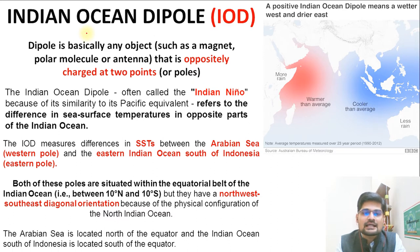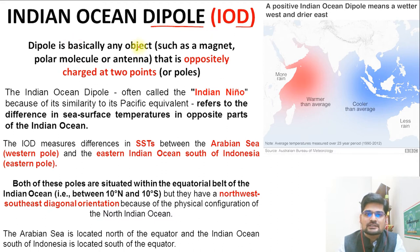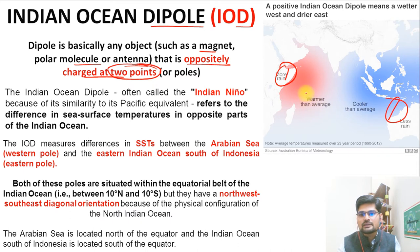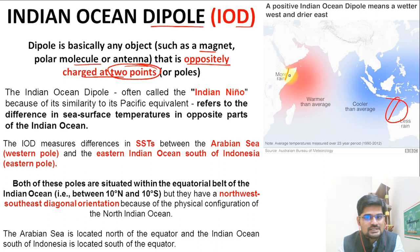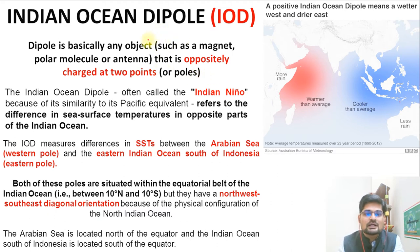Now let's understand what happens in the Indian Ocean Dipole and what it is all about. The word 'dipole' basically means any object — such as a magnet, polar molecule, or antenna — that is oppositely charged at two points. So polarity is important here. In climatology, the circulation happening between two poles is called a dipole study. The Indian Ocean has this kind of dipole movement, which is studied as IOD — the Indian Ocean Dipole.